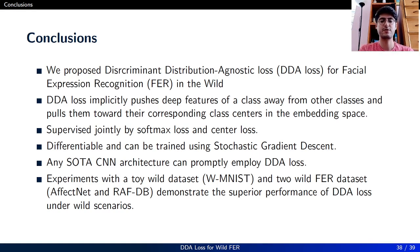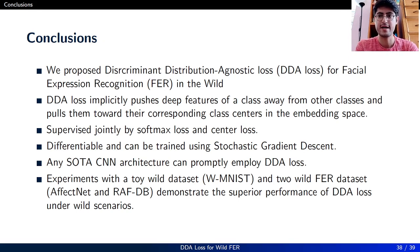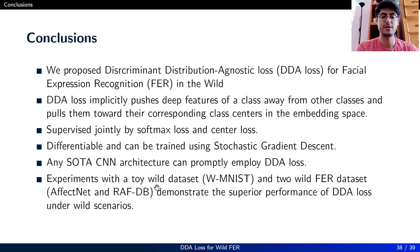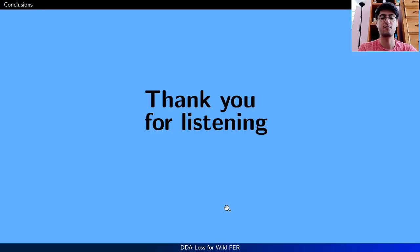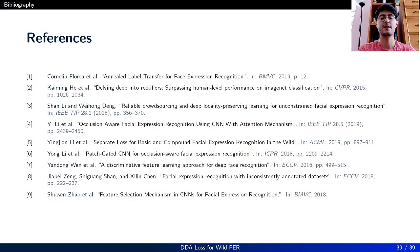To conclude, we propose Discriminant Distribution-Agnostic Loss for facial expression recognition in the wild. DDA Loss implicitly pushes deep features of a class away from other classes and pulls them toward their corresponding class centers in the embedding space. It is supervised jointly by softmax loss and center loss, is differentiable, and can be trained using SGD. Any state-of-the-art CNN architecture can promptly employ DDA Loss, and our experiments with a toy dataset and two wild FER datasets demonstrate its superior performance. Thank you for listening.